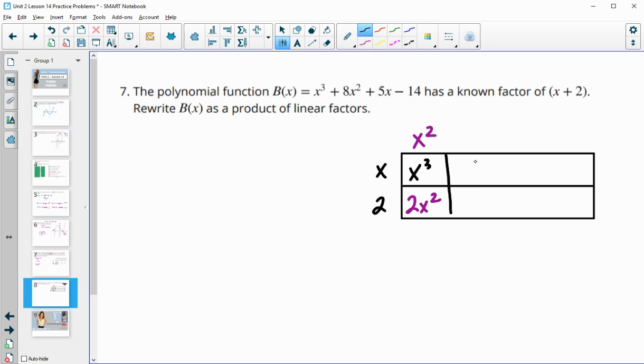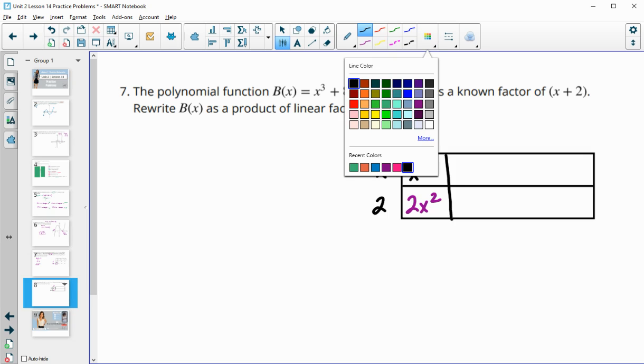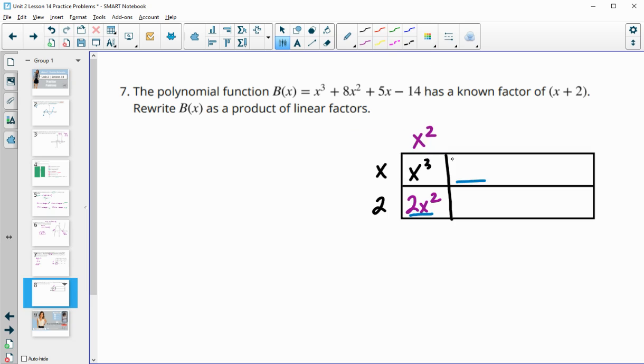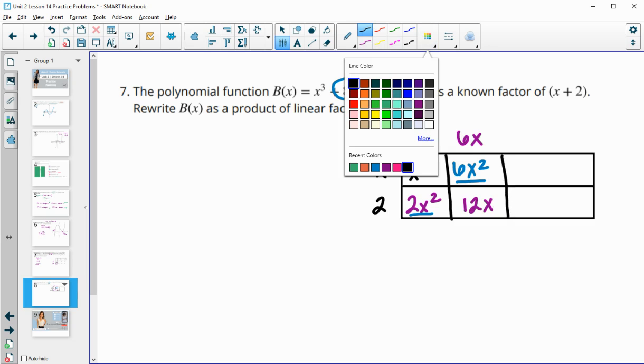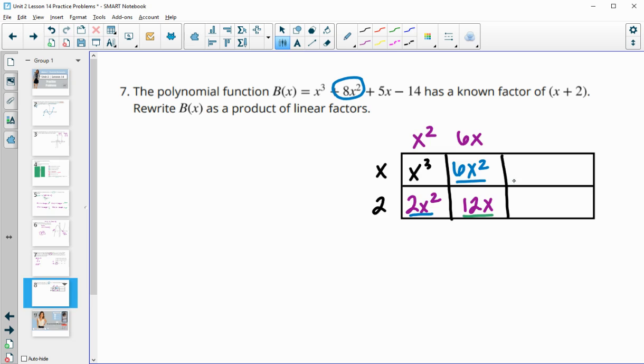This helps us find the next term—it's a like term with 2x squared. 2x squared plus 6x squared gives us 8x squared. x times 6x gives 6x squared. 6x times 2 gives 12x. We find the like term: 12x minus 7x gives us 5x. x times negative 7 gives negative 7x. Negative 7 times 2 gives negative 14, which matches. We divided correctly.